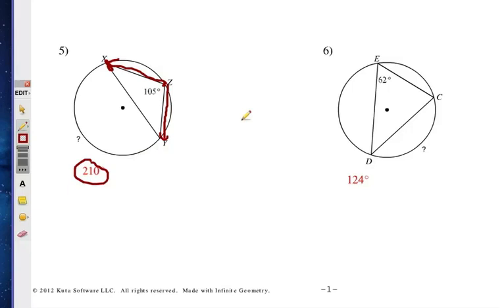And number six, fairly simple here. Again, you notice the angle is E, and it is 62. That's an inscribed angle. And so, double it because that will open up to give you the arc measure, and that's 124. Alright, so those are the first two fairly simple. Let's try two more.